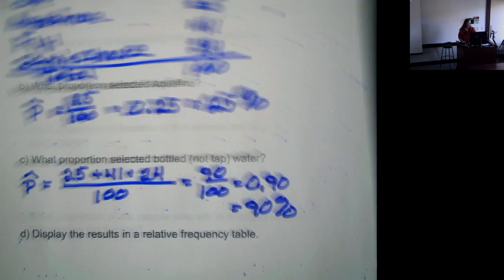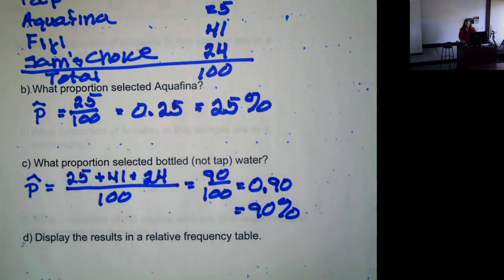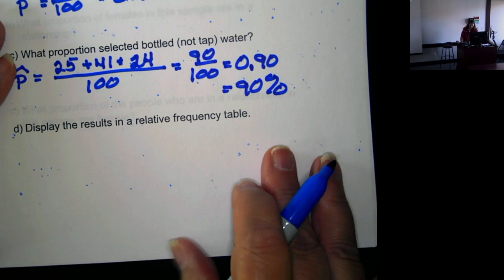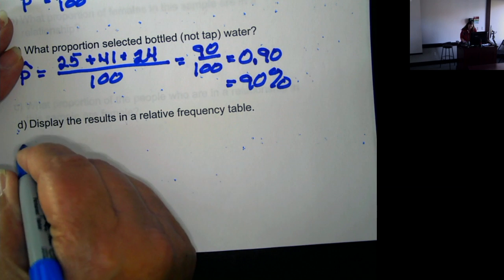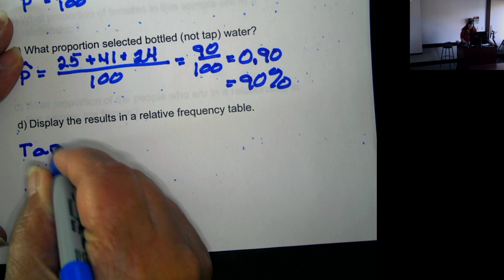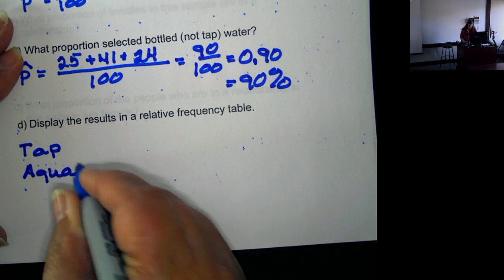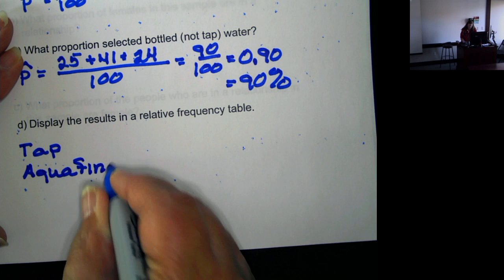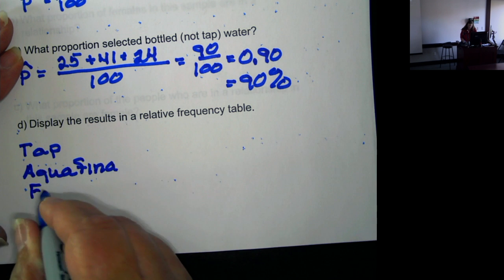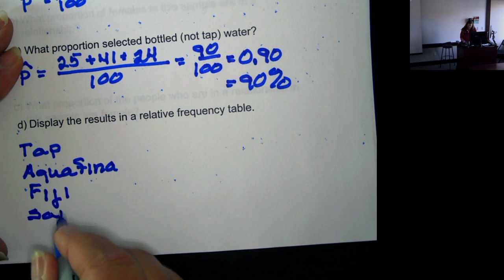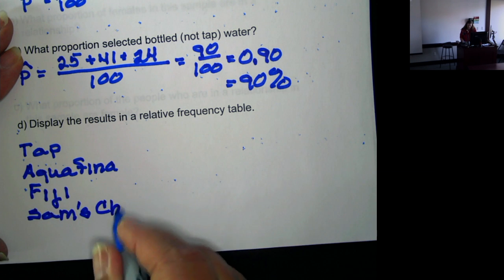Now for a relative frequency table, we're just going to take the original frequency table and put it in percents instead of raw numbers. So we have tap, Aquafina, Fiji, Sam's choice.